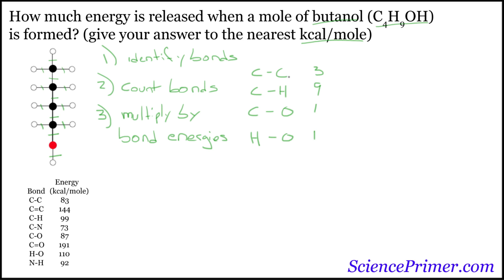So we have the 3 carbon-carbon bonds, and there are 83 kilocalories per mole of energy associated with this bond type. So 3 times 83, and this equals 249.